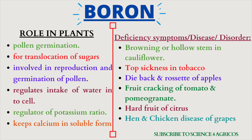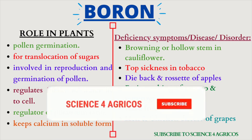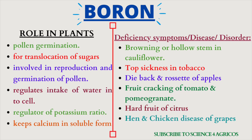Now let's learn about boron. Boron is essential for pollen germination and translocation of sugars; it is involved in reproduction and germination of pollen, regulates water intake in the cell, regulates the boron-to-potassium ratio, and keeps calcium available in soluble form in plants. Deficiency symptoms and disorders include browning or hollow stem in cauliflower, top sickness in tobacco, dieback and rosette of apples, fruit cracking of tomato and pomegranate, hard fruit of citrus, and hen and chicken disease of grapes. These disorders are all very important.